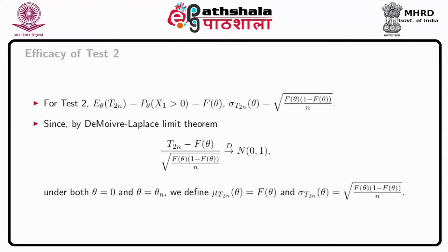Next, considering the sign test statistic, T2_n minus F(theta) divided by the square root of F(theta) times (1 minus F(theta)) divided by n converges to normal(0,1) in distribution by the De Moivre-Laplace limit theorem under both theta equals 0 and theta equals theta_n.